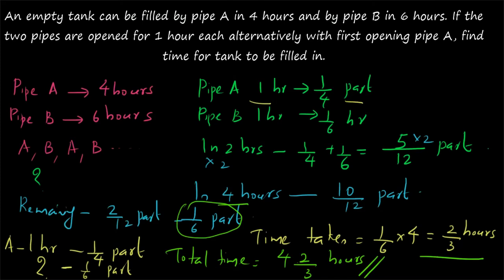To summarize: A works one hour, then B works. In two hours 5/12 part is filled. In four hours 10/12 part is filled. The remaining 1/6 part is filled by pipe A in 2/3 of an hour, making the total time 4 and 2/3 hours. Once you practice these questions, you will be able to do any kind of question from this topic. Thank you for watching.